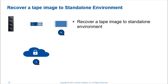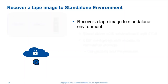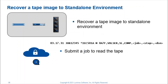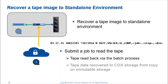The second example looks at recovery to a standalone environment, starting from a clean slate. Assuming a standalone zDOS environment and infrastructure, but with connectivity and permissions to the immutable storage. Again, it's as simple as submitting a process to read the tape. CGX checks the local storage first by default, finds no tape image, and goes out to the immutable storage, then presents the tape image to the recovery process and automatically populates the local tape storage as data is recovered.